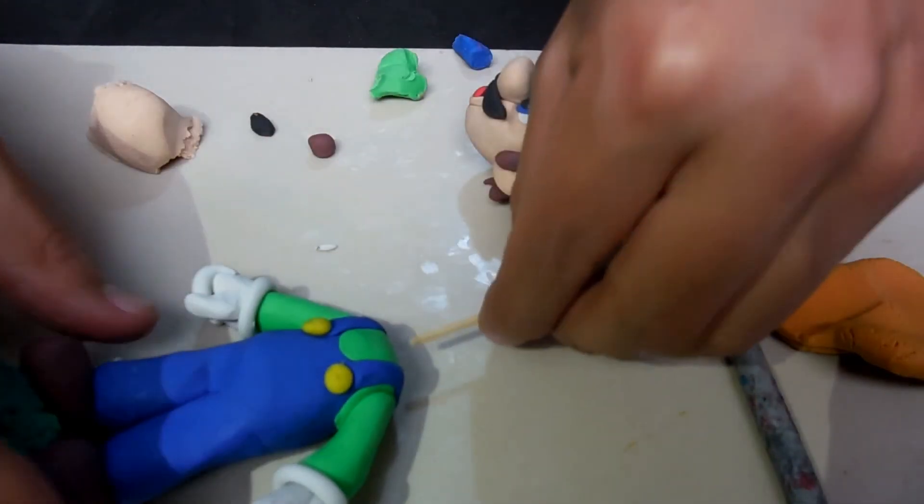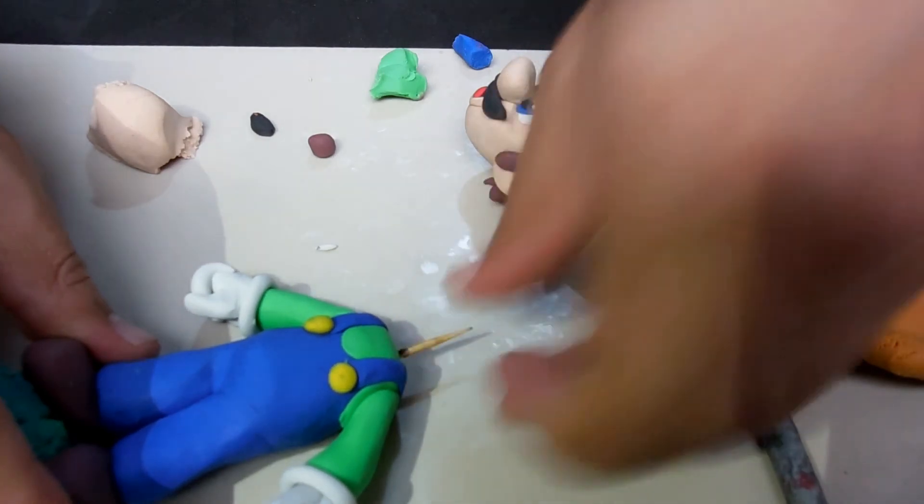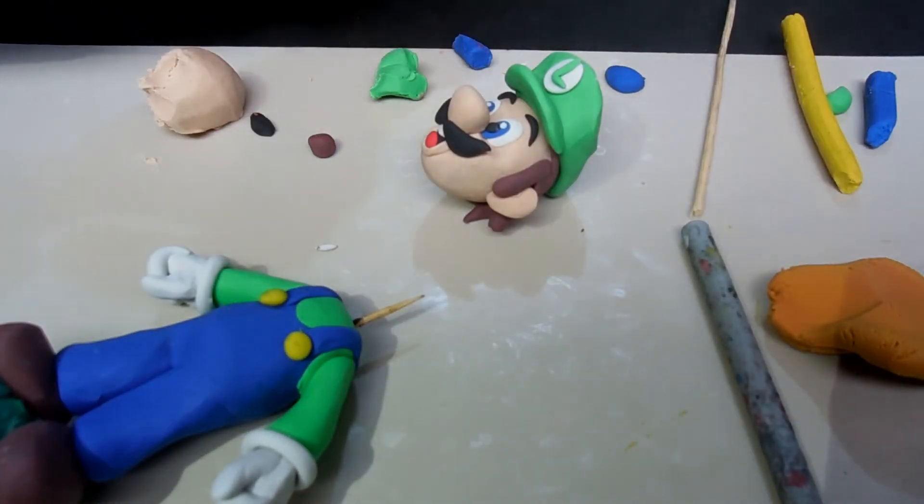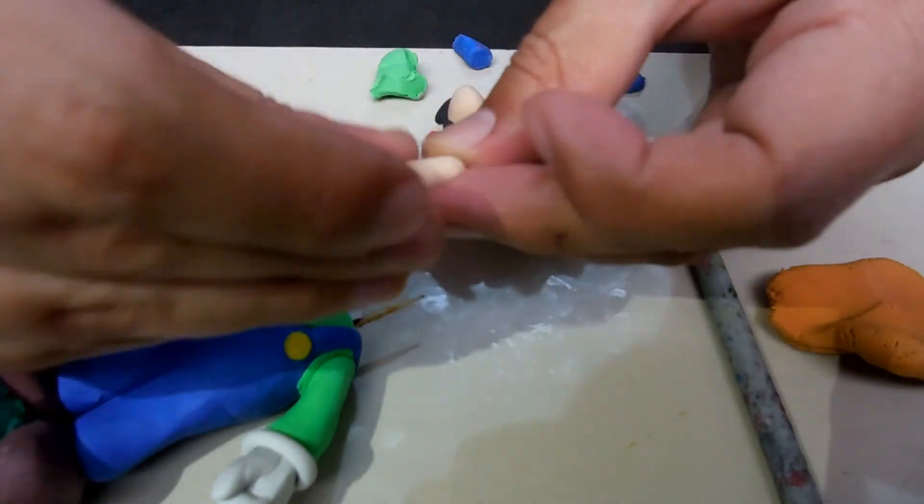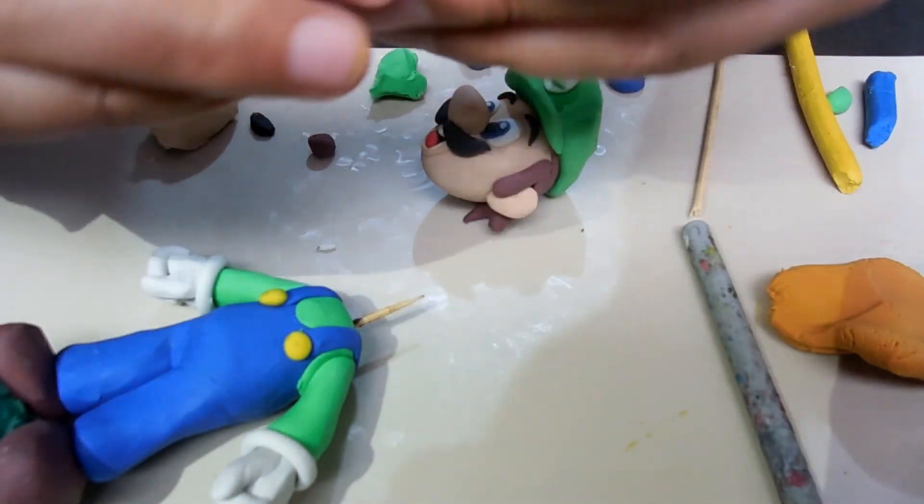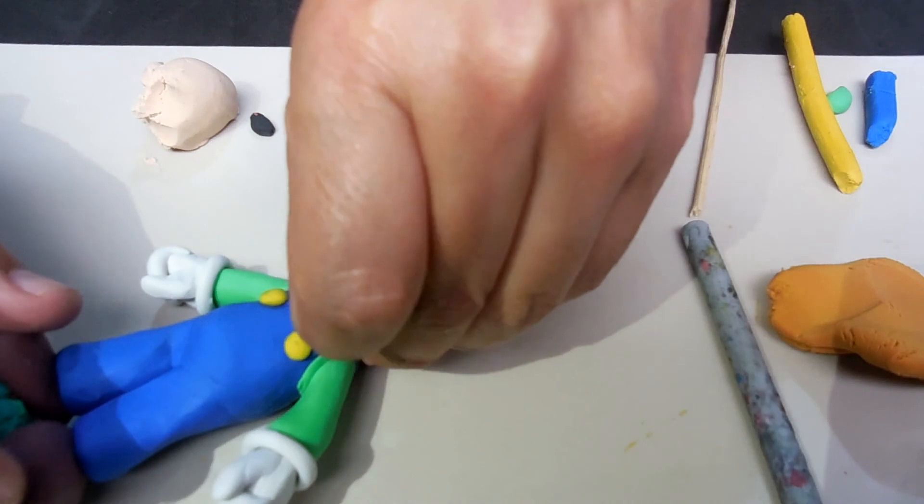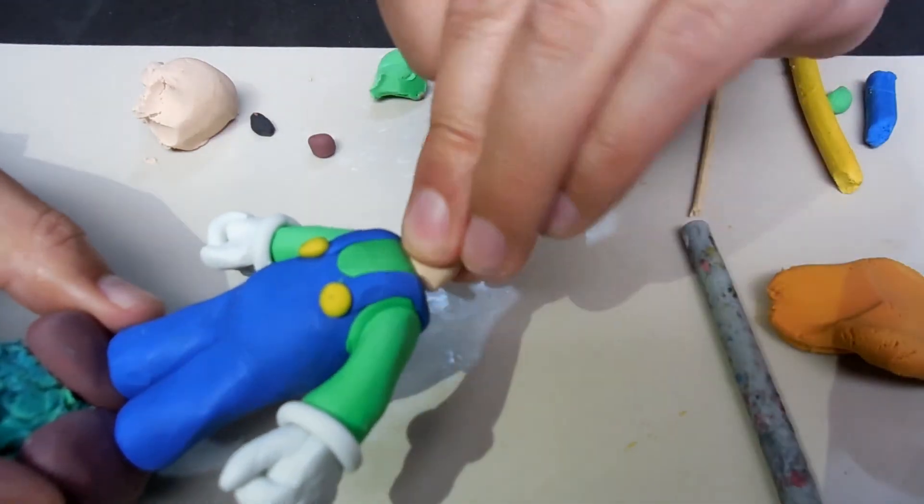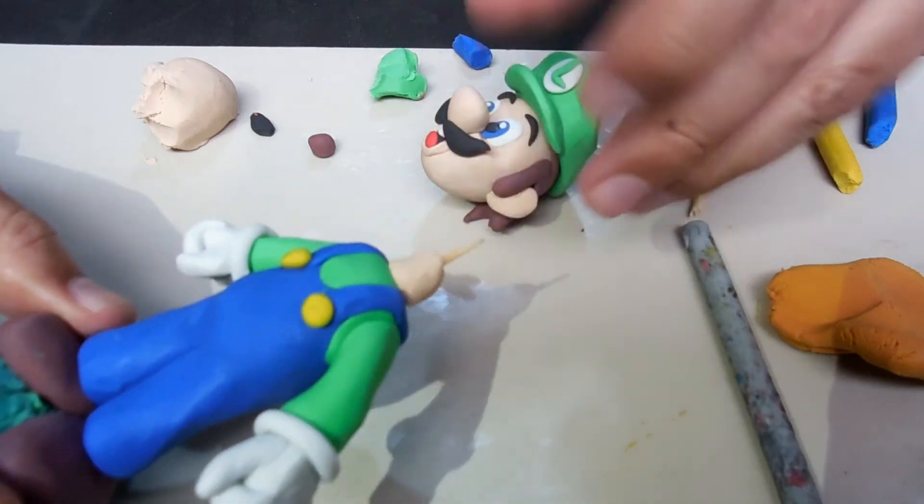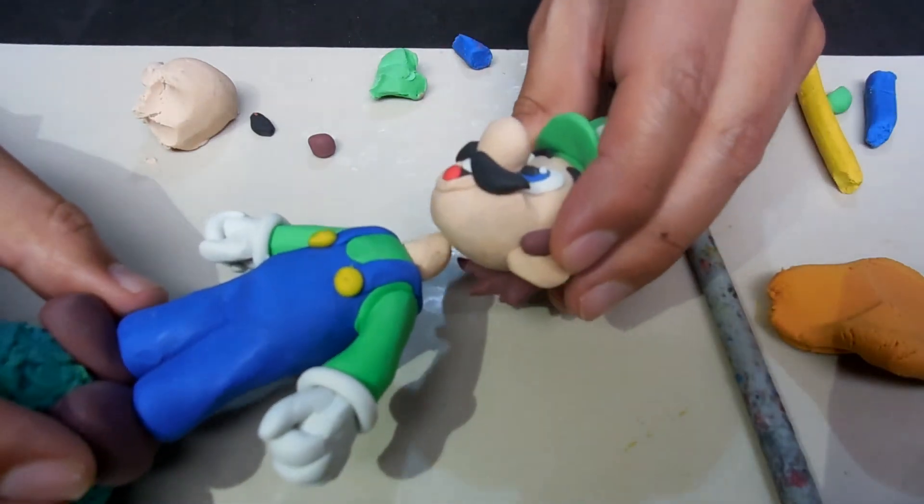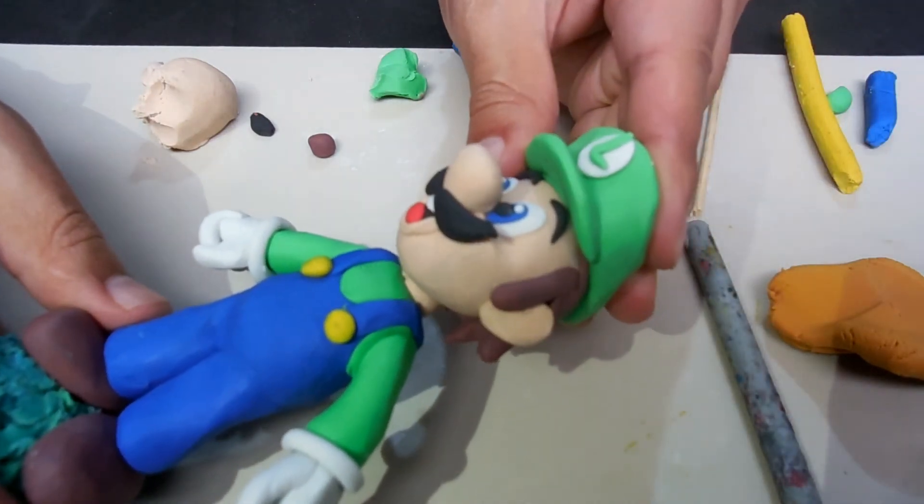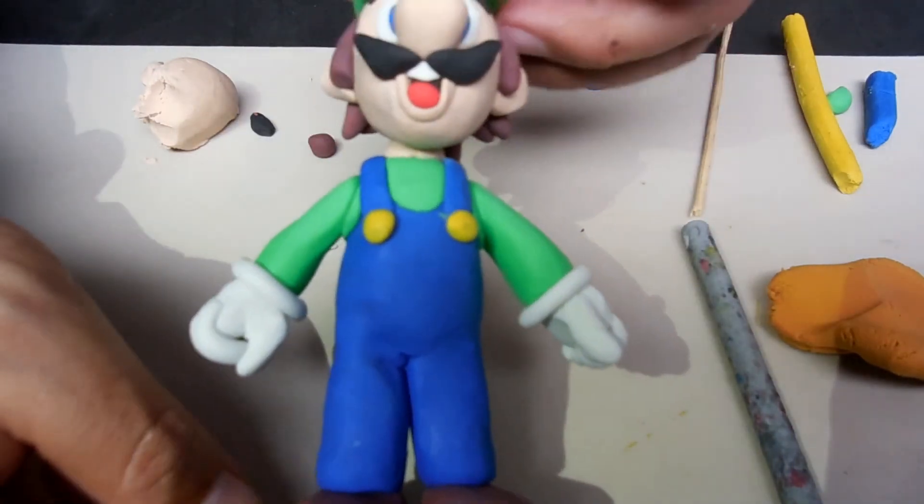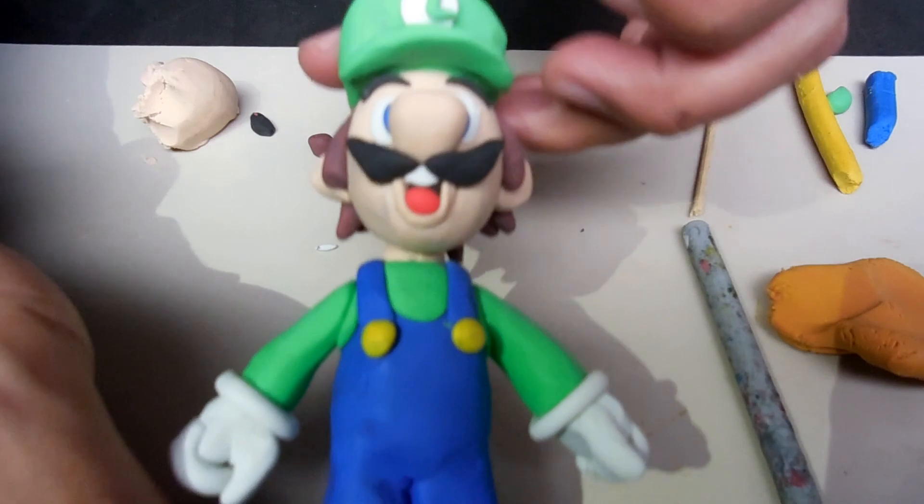Ahora sí pego el sombrerito en la cabeza a nuestro amigo Luigi. Aquí cojo medio palillito, lo inserto en el tronco del cuerpo. Antes de pegar la cabeza, le hacemos el cuello haciendo un pedacito, ponemos un pedacito de color piel o color durazno, una tirita. La envolvemos y colocamos la cabeza. Y listo, terminamos a nuestro amigo Luigi.